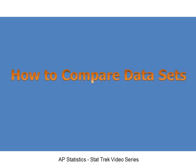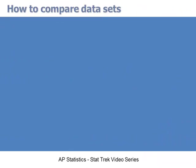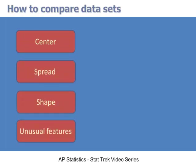Let's talk about how to compare data sets of quantitative variables. When you compare quantitative variables from two or more data sets, focus on four features: center, spread, shape, and unusual features.